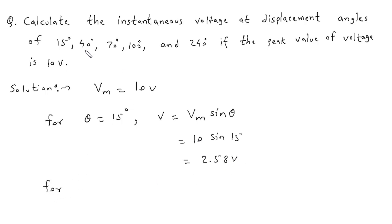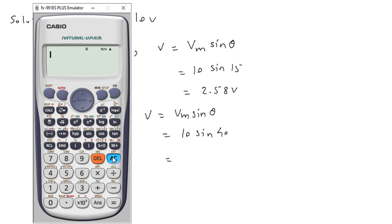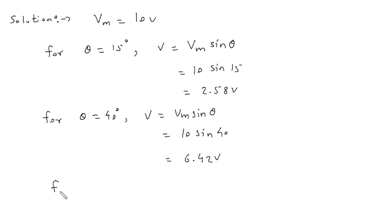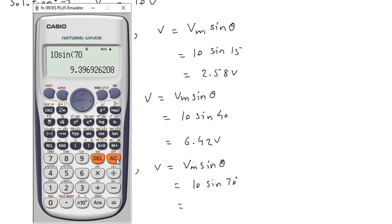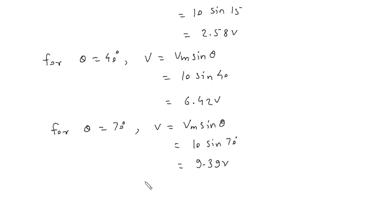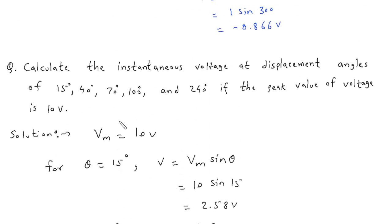Now for theta equal to 40 degrees, V is equal to Vm sin theta, Vm is 10 volt, so V equals 10 sin 40. For theta equal to 70 degrees, V is equal to Vm sin theta, Vm is 10 V, sin 70 degrees — this will be 9.39 volt.